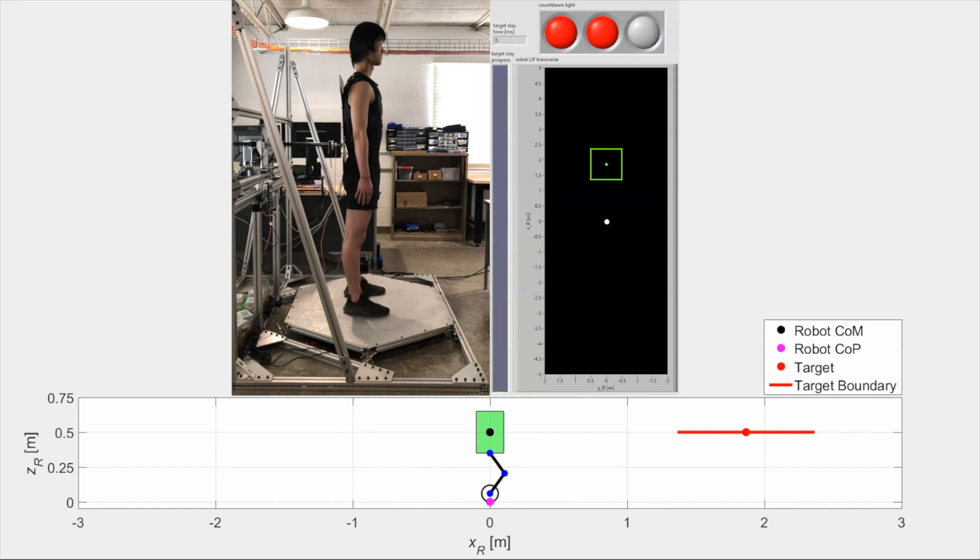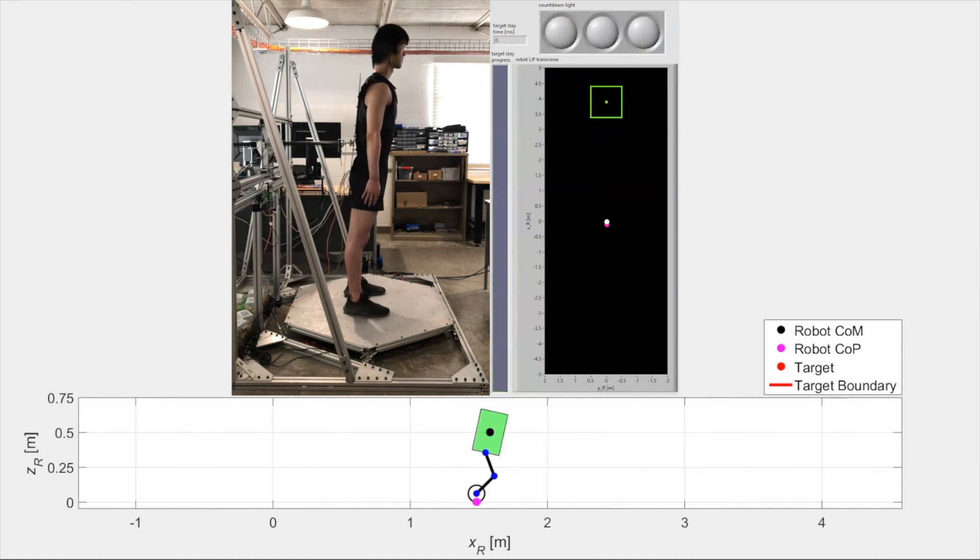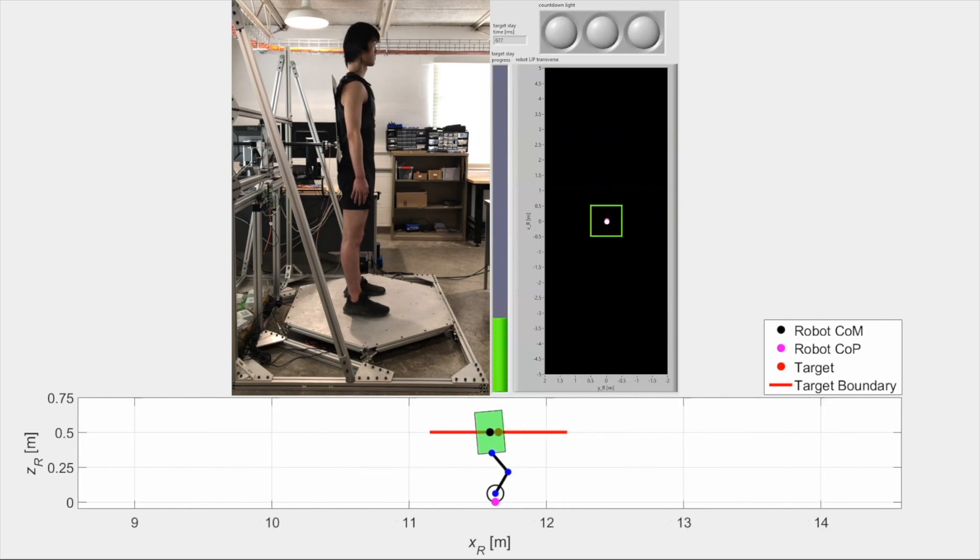In velocity tests, the target travels at a constant velocity. The subject teleoperates the robot to catch the target and stay within it for three seconds.